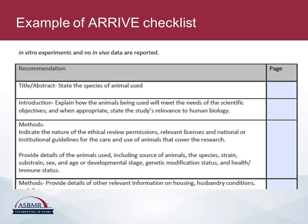This slide shows an example of the ARRIVE checklist. In all our checklists, the basic format is the same: in the left-hand column you have the recommendation — for example, state the species of animal used, state how the animals used will meet the needs of the scientific objectives, and so on. All we ask is that you put the page number in the right-hand column where the recommendation has been fulfilled.